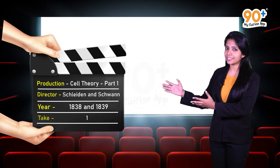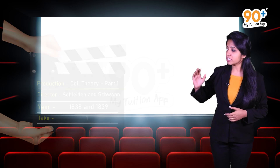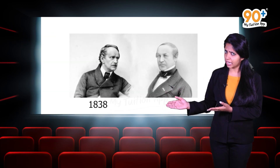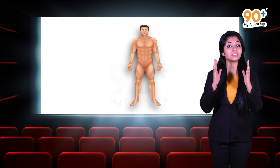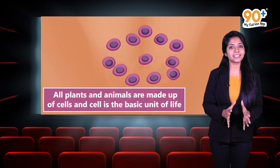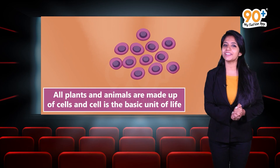Now we know who discovered the cell, the living cell, the nucleus, and the protoplasm. It's time to meet two great scientists who introduced cell theory — none other than Schleiden and Schwann. They contributed in different years: Schleiden in 1838 and Schwann in 1839. Together they stated that all plants and animals are made up of cells and that the cell is the basic unit of life.